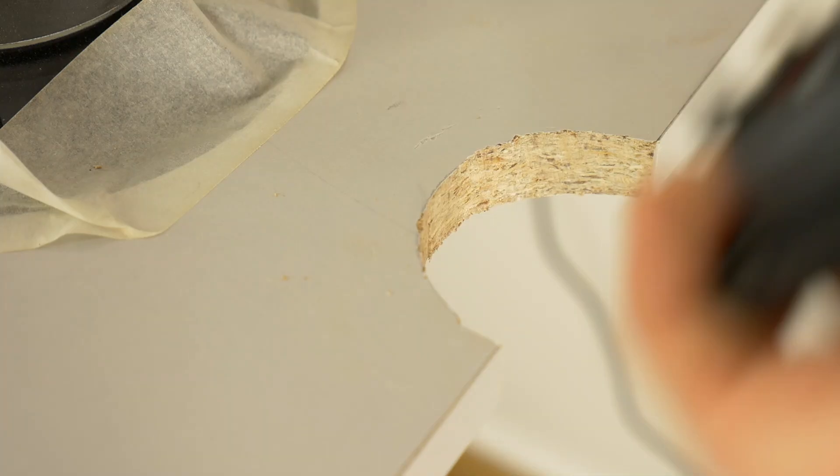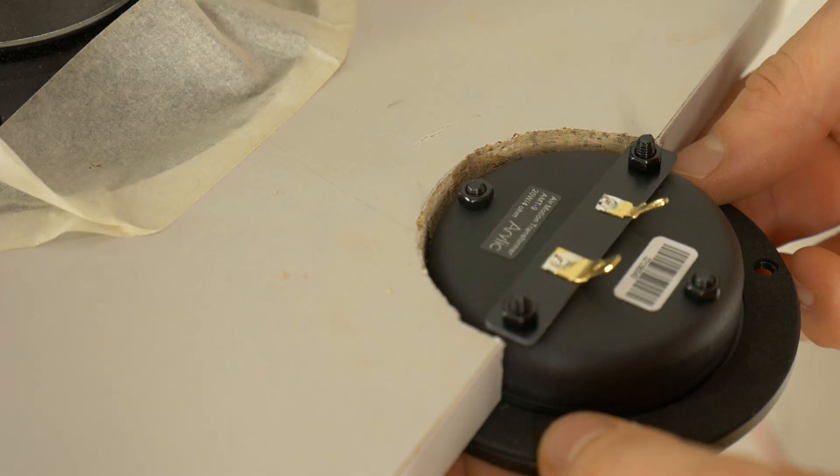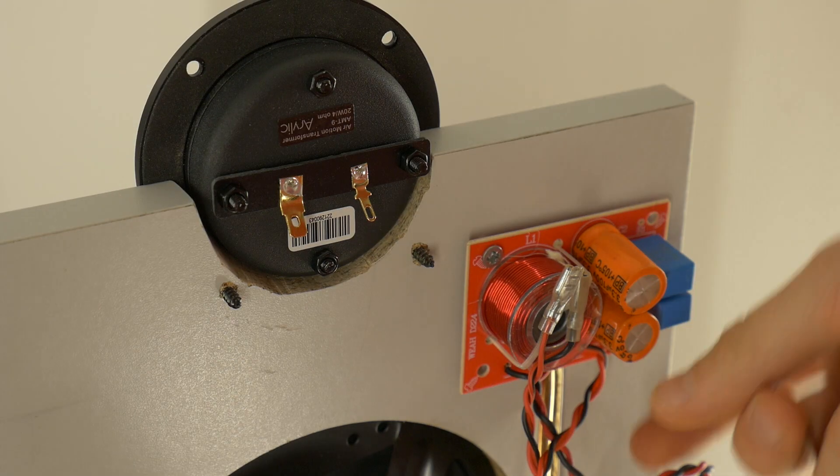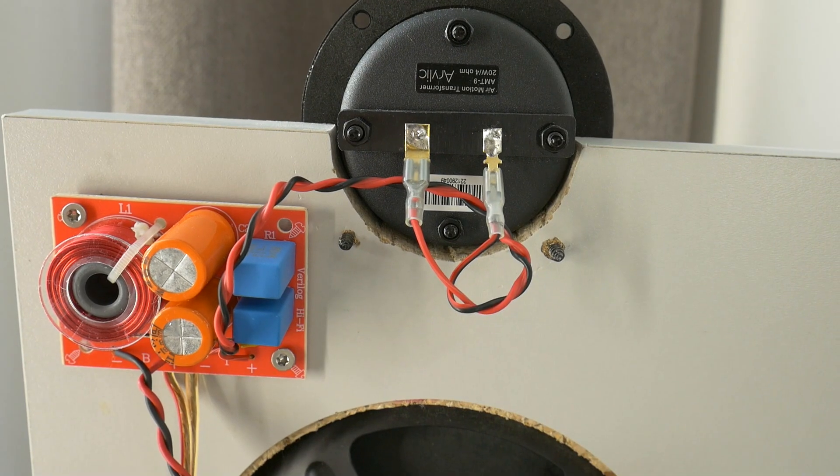After the holes are cut, all you have to do is screw the tweeters, solder the wires to the audio crossover and screw it all together and connect it on the open baffle enclosure.